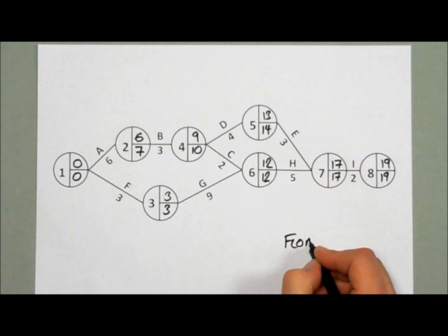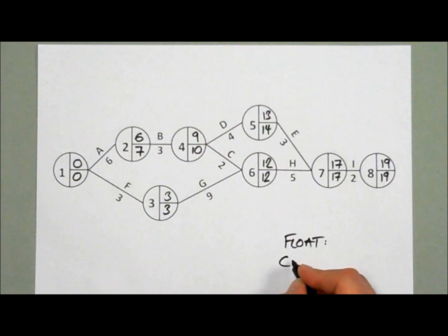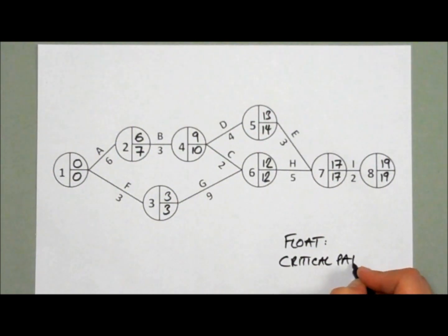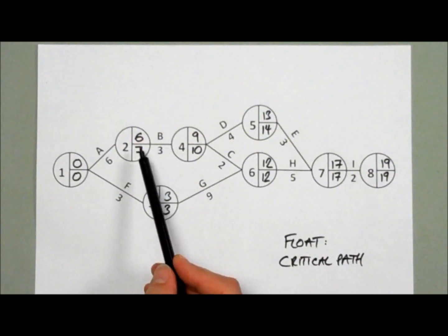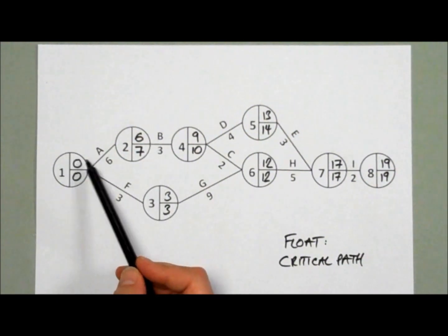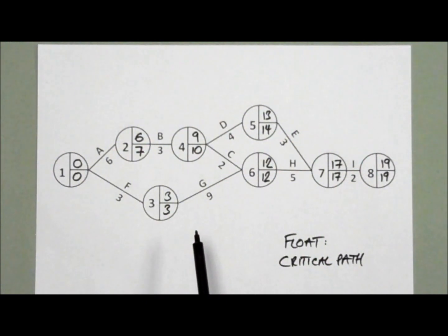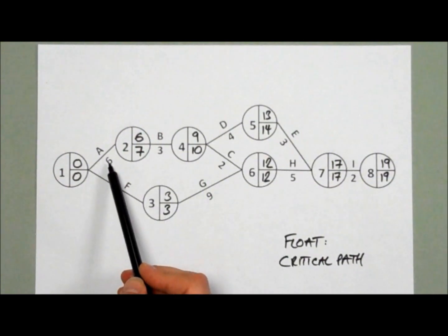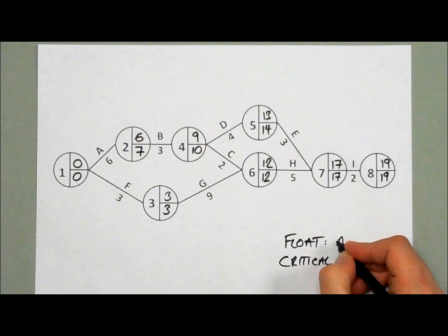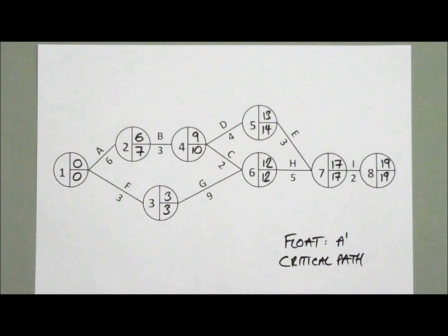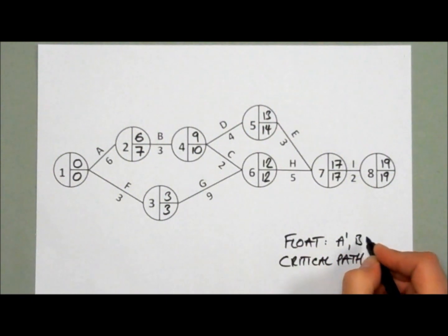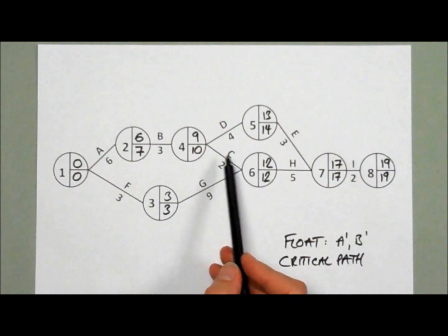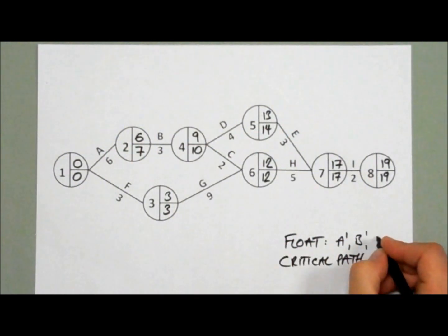We're looking for those tasks that do have float, and those that don't are going to be critical. We calculate it by looking at the latest point the task has to be finished, minus the time it must be started, minus the duration - if anything is greater than 0, we have some float. Let me show you: 7 minus 6 is 1, minus 0 is 1. So activity A has 1 week of float. Activity B: 10 minus 3 is 7, minus 6 is 1 - so activity B also has 1 week of float. Activity C: 12 minus 2 is 10, minus 9 is 1 - so C has 1 week of float. Activity D: 14 minus 4 is 10, minus 9 is 1 - so D equally has 1 week of float.